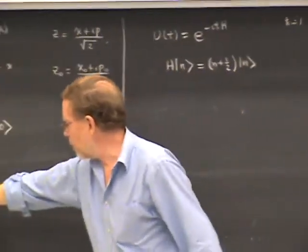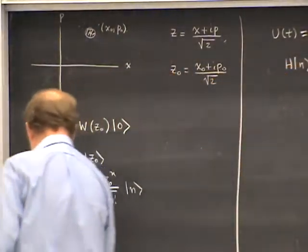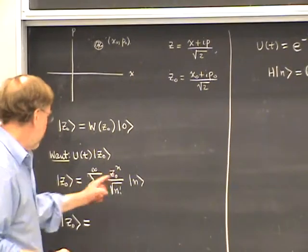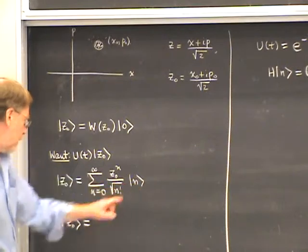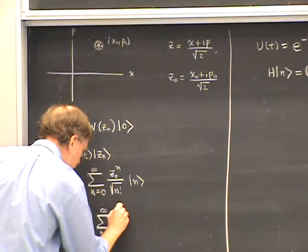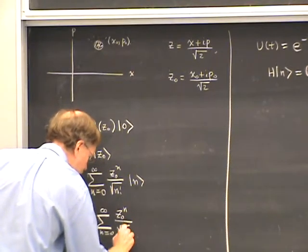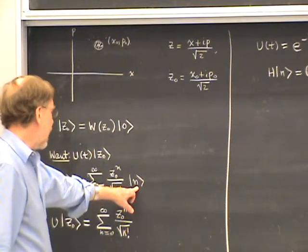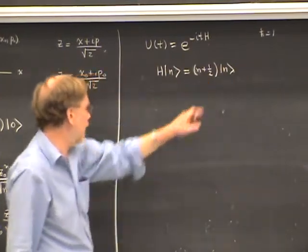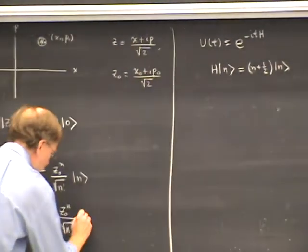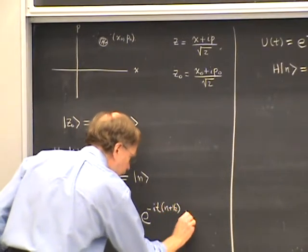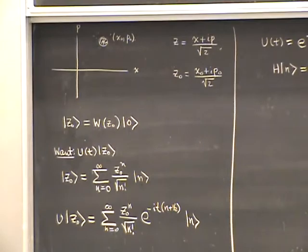This makes it easy to apply U(t) to both sides of the expansion equation. On the left-hand side, we get U(t) acting on Z₀, which is what we want. On the right-hand side, U(t) comes through and acts on the eigenstate |n⟩, giving the same sum from n equals 0 to infinity with the same coefficients Z₀ to the nth over square root of n factorial, but now U(t) acting on |n⟩ brings out the exponential e to the minus iT times the energy eigenvalue — e to the minus iT times (n plus 1/2) — multiplying the energy eigenstate |n⟩. This is a phase factor.